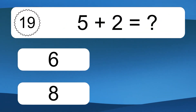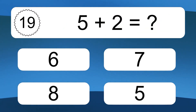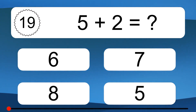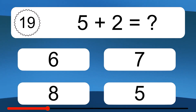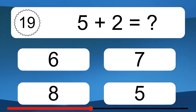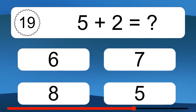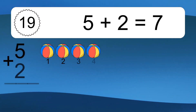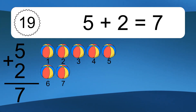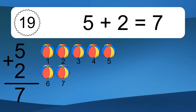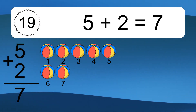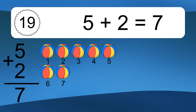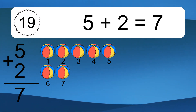5 plus 2 equals what? 5 plus 2 equals 7. Let's count it: 1, 2, 3, 4, 5, 6, 7.